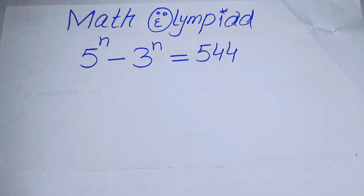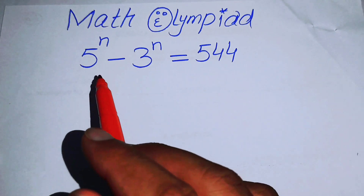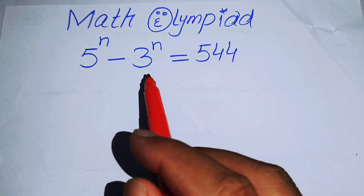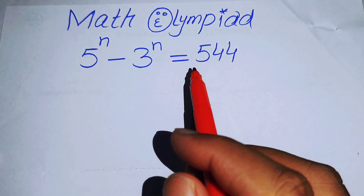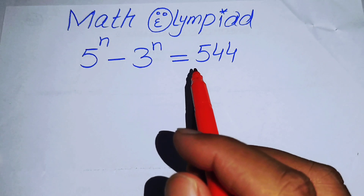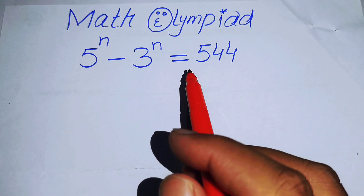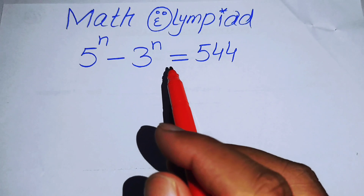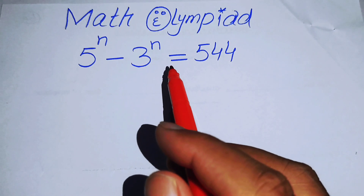Hello everyone, welcome back to the Map of Mathematics. In this video we are going to solve this algebra problem: 5 to the power of n minus 3 to the power of n equals 544, and we are going to solve for the value of n.